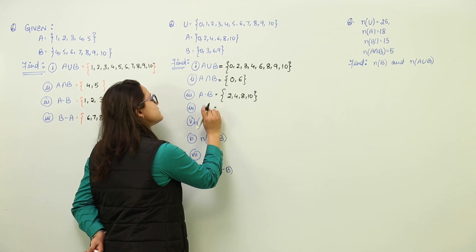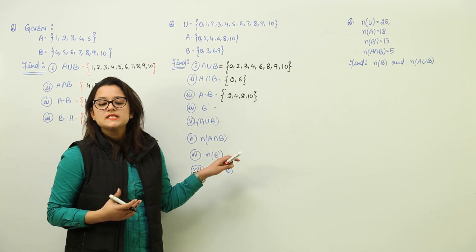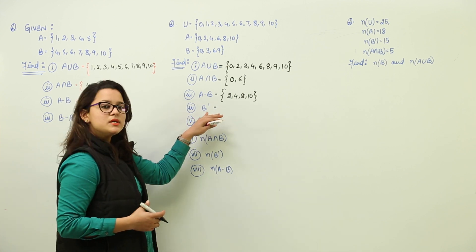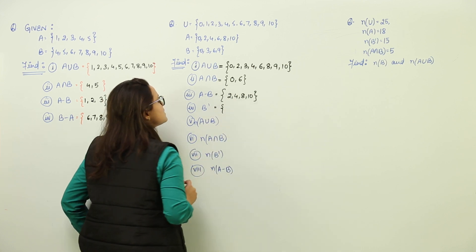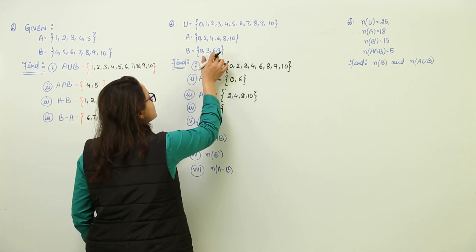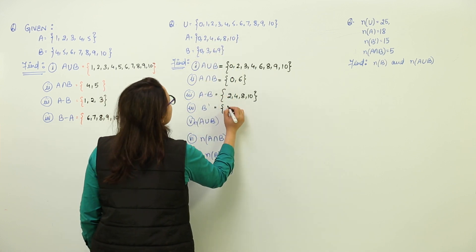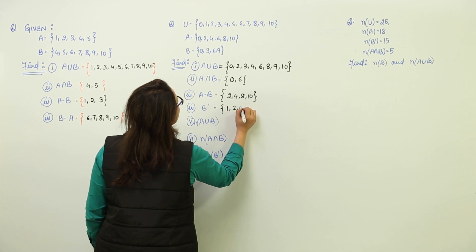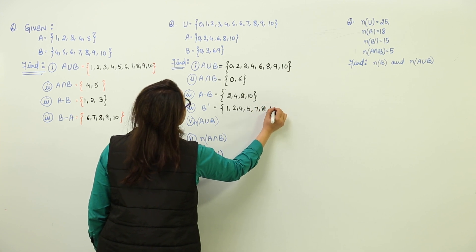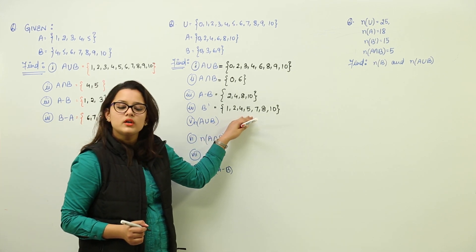Next we have to find out B's complement. B's complement means the elements which are present in the universal set but not in B. The elements common to B will not be included. So we have 1, 2, 4, 5, 7, 8, and 10. These are the elements present in the universal set but not in set B.